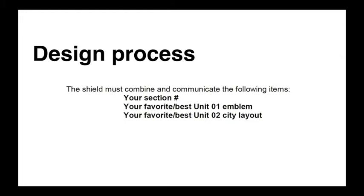That was an example from the real world that encapsulates a lot of the ordering systems as well as positive and negative space in some of the primary elements. The design of your shield for your city and your knight must combine and communicate the following items: your section number, your favorite or best emblem from Unit 1, and your favorite or best city layout or tile from Unit 2. In CAP 101, we look for opportunities for projects to lead into one another and build on one another — we call this an iterative design process, in the sense that you are recalling or referencing previous design projects in the design of your current project. We will do this throughout the semester.